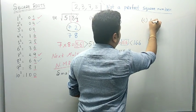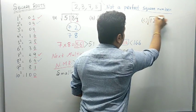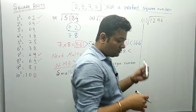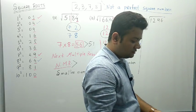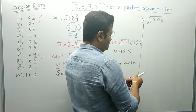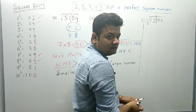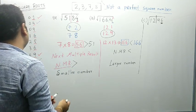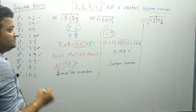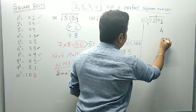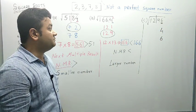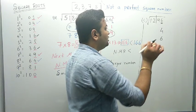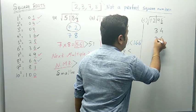I wrote the third number as 1296. Now the reason I chose these three numbers is to show you three different conditions. In 1296, you select 96 from the right-hand side. What is in the unit space? 6 in the unit space. 6 comes in the unit space in the square of 4 and in the square of 6. So I write 4 and 6. The remaining number is 12. The square number which is less than 12 is 9, and square root of 9 is 3. So the options are 34 and 36.